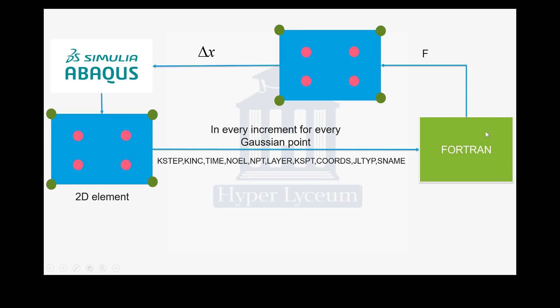For each integration point, Abacus sends these variables to Fortran. After compiling this data, Fortran sends the answer back to that exact integration point. After doing this for all integration points and increments, we can get the integrated results, and Abacus can then solve for the displacement.